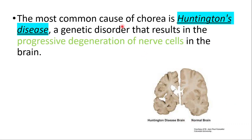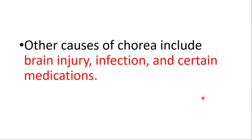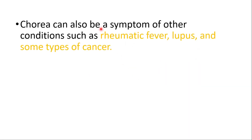The most common cause of chorea is Huntington's disease, which is a genetic disorder that results in the progressive degeneration of nerve cells in the brain. Other causes of chorea include brain injury, infection, and certain medications.